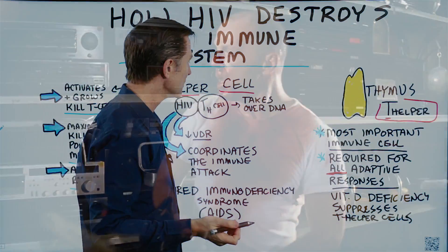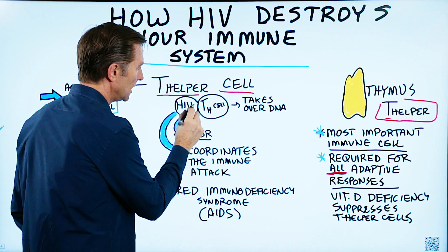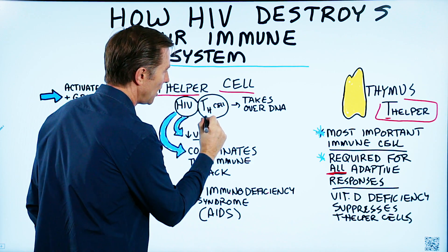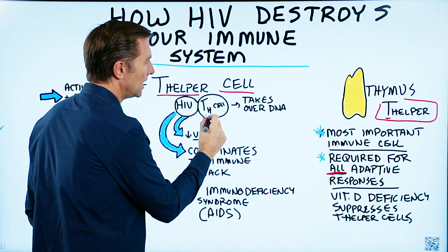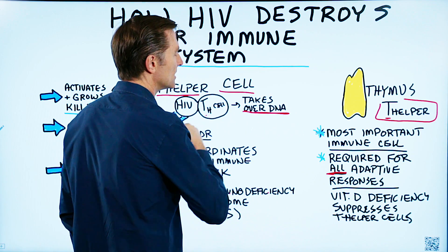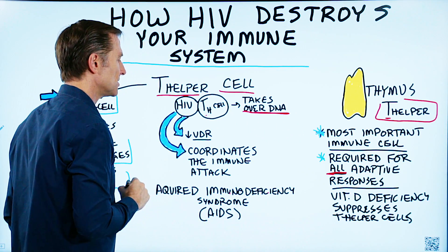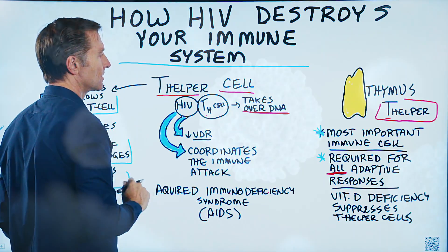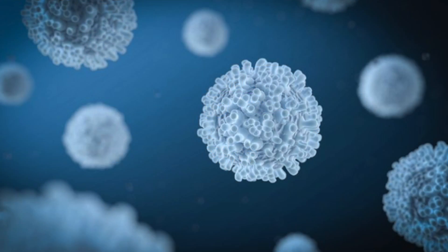The HIV virus is very sneaky because it fuses with the T helper cell and then starts taking over the DNA and reproducing, leaving your T cells completely wiped out. Basically, you don't have much of an immune system anymore.